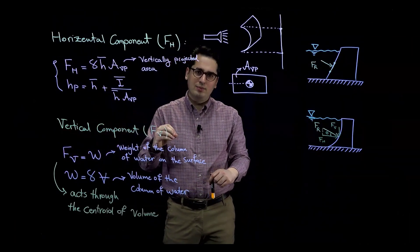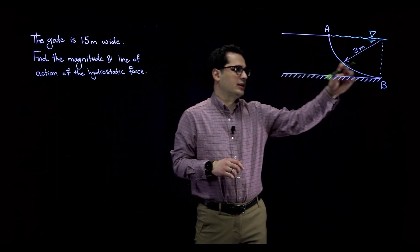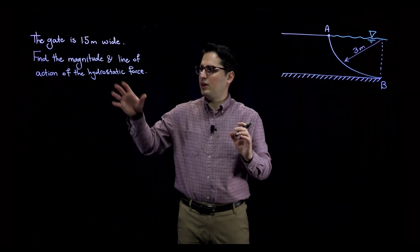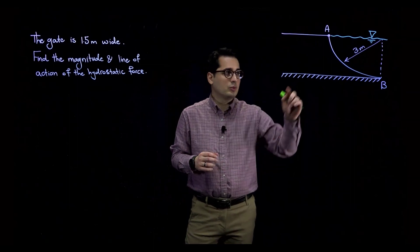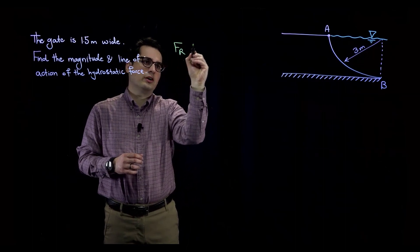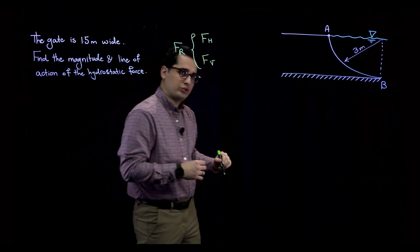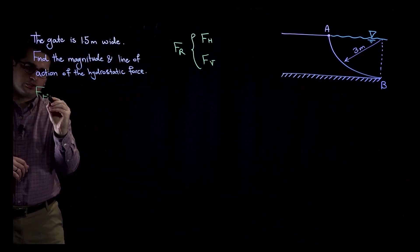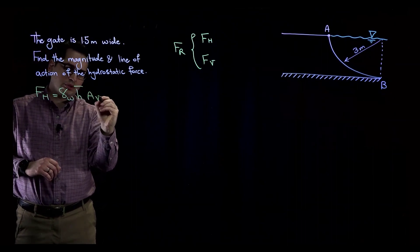Now we'll work through an example. We have a gate that is part of a circle with a radius of 3 meters. We want to calculate the magnitude of the hydrostatic force and its line of action. Since this is a curved surface, we need to find F sub H and F sub V first. Starting with the horizontal force: F sub H equals gamma of water times H-bar times the vertically projected area.